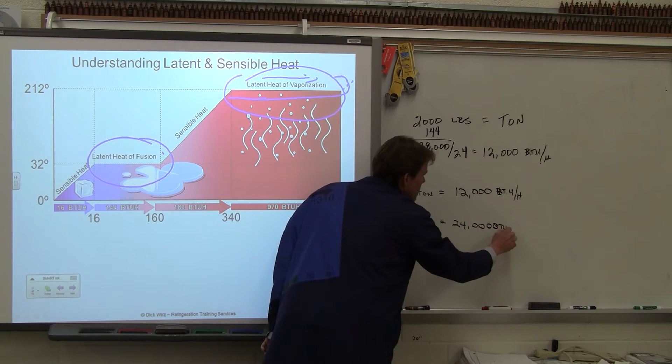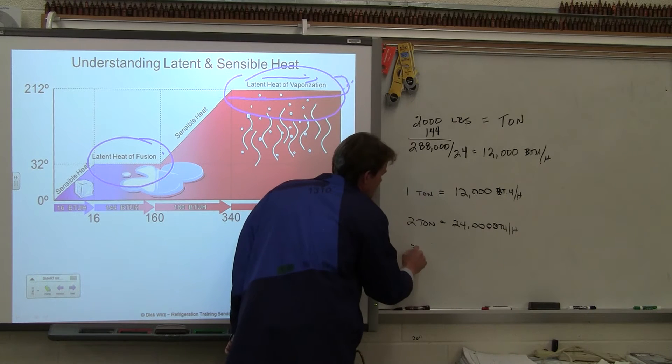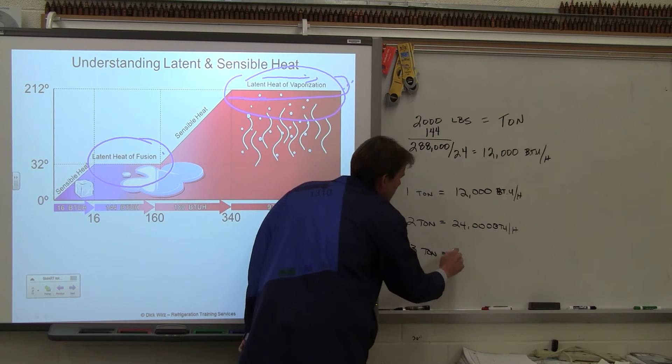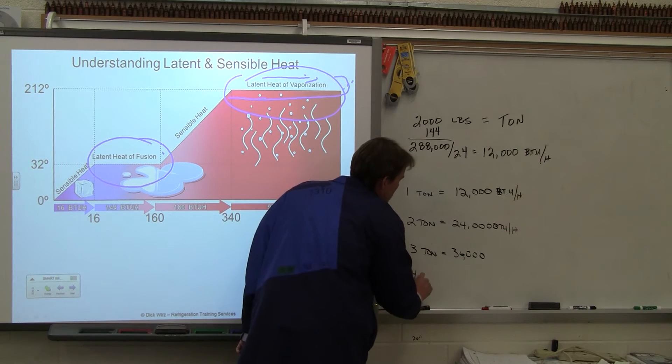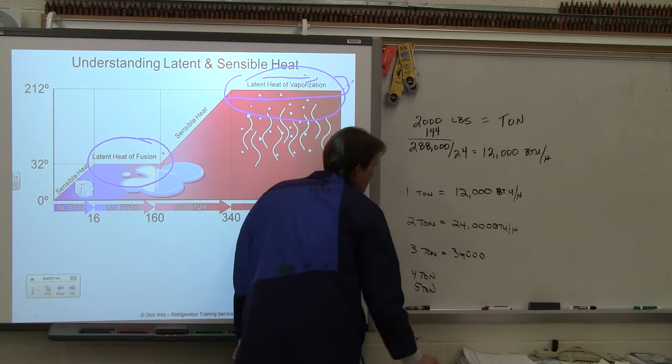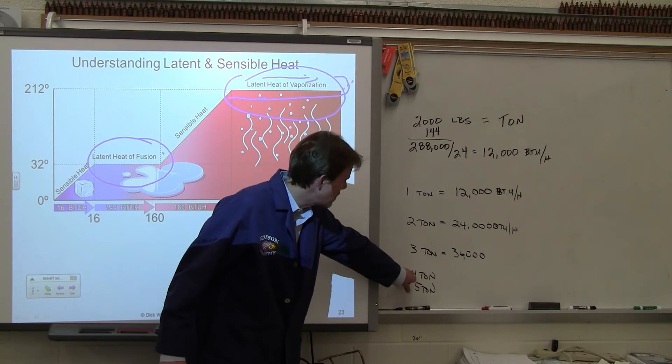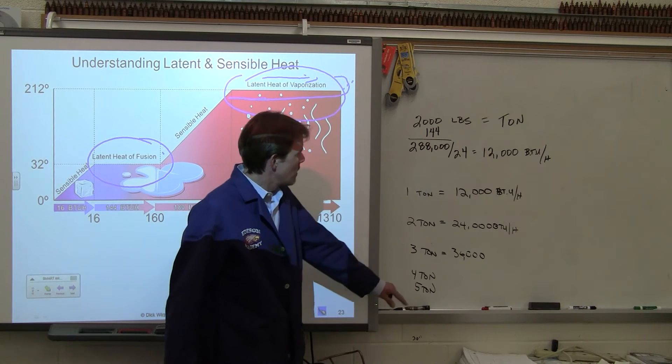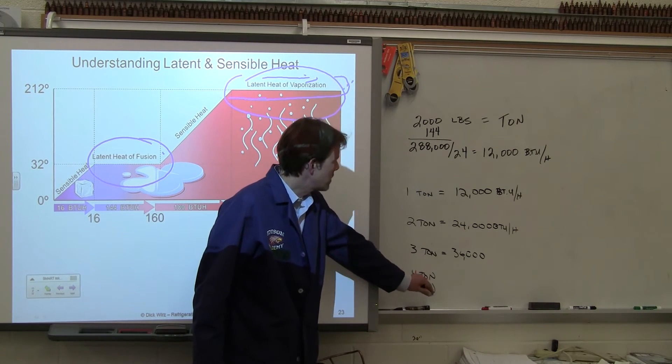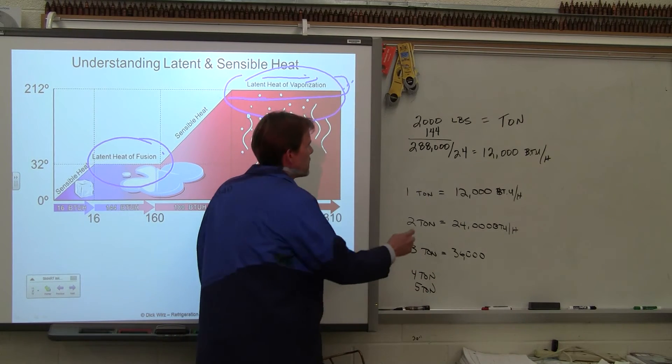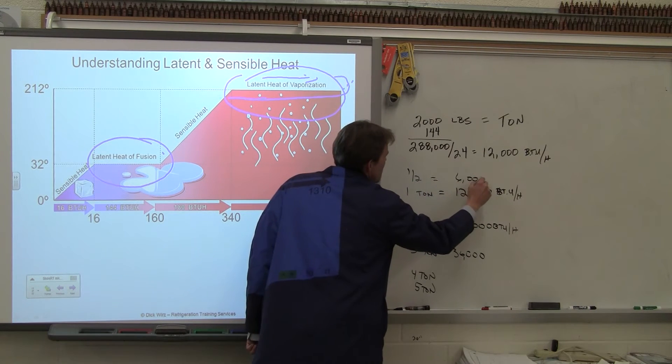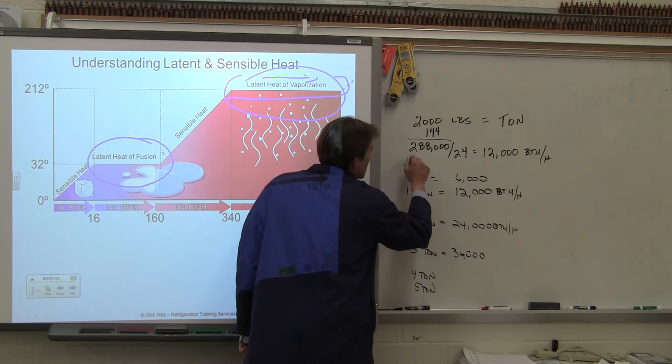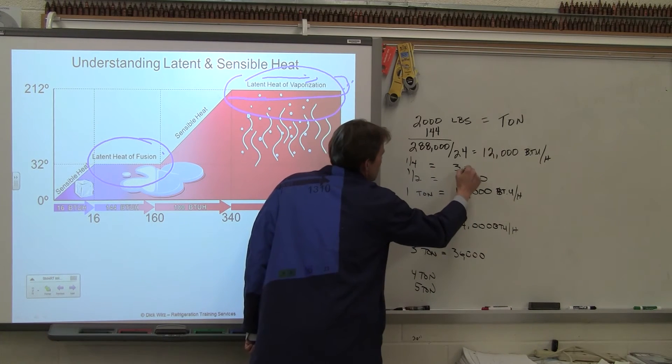Then 3 times is 36,000 BTUs. And then they can also go down the other way. Really, we don't have a 4 and a half, but you can kind of make one by combining a 5 ton indoor and a 4 ton outdoor, though you really want to match them, indoor and outdoor. We can also go the other way. We can go to a half a ton, how many BTUs would that be? 6,000 BTUs.